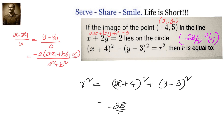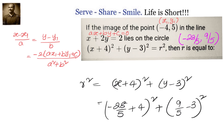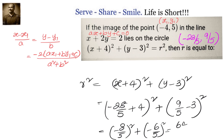r square equals to minus 28 by 5 plus 4 whole square plus 9 by 5 minus 3 whole square. Simplifying, we get minus 8 by 5 whole square plus minus 6 by 5 whole square, which equals to 64 by 25 plus 36 by 25, that is 100 by 25, which equals to 4. Therefore r square equals to 4, and r equals to 2.